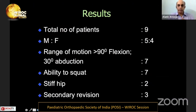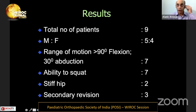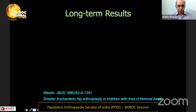From our modest series, strict selection criteria are applied. The key is a fairly well-developed acetabulum — without it, containing the trochanter is very difficult. In about nine patients, 70–80% had good range of motion especially in flexion-extension, with some abduction, and many could squat. However, two ended up with a stiff hip, so patient selection is very important — despite best efforts, suboptimal results from stiffness can occur.